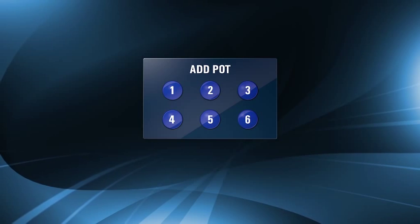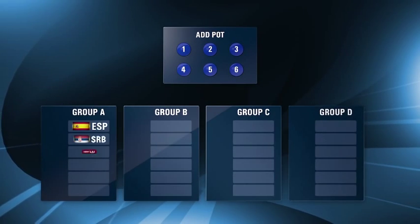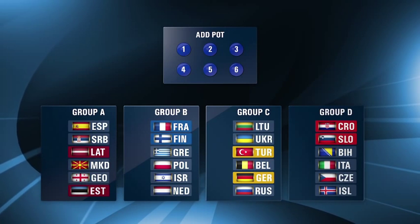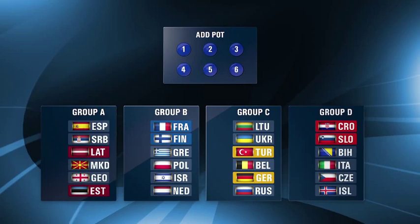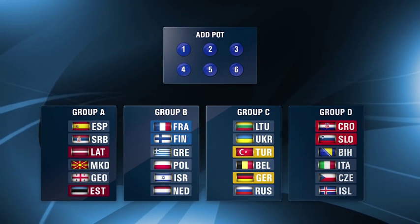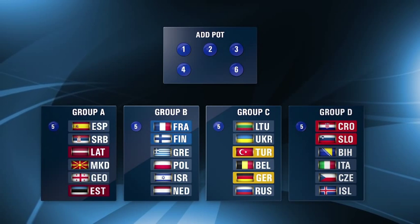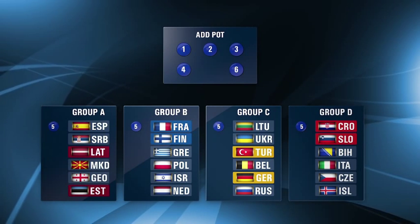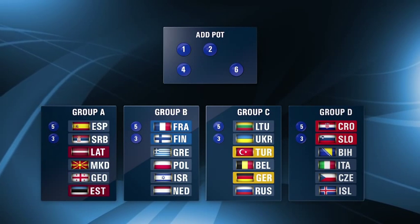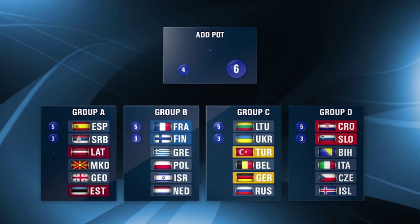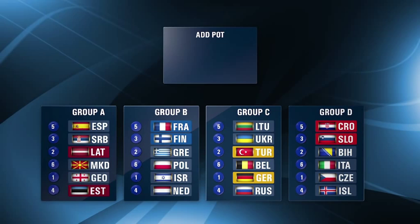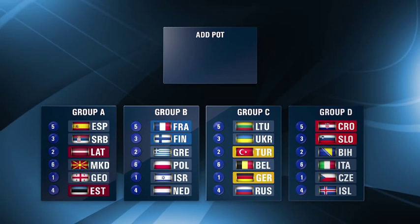There's an additional pot that contains numbers 1 to 6. These numbers are drawn for each group at the end of the draw to determine the position of each team within their group and the subsequent order of games. The first number drawn is the number for all first-named teams. For example, the number 5 is drawn and will be given to all of the top-line teams in all groups. Number 3 is then drawn for the second-named teams in all groups. The EuroBasket 2015 draw is completed when all teams have been drawn and placed in their correct number order in each group and the order of games has been determined.